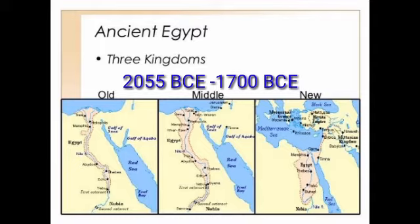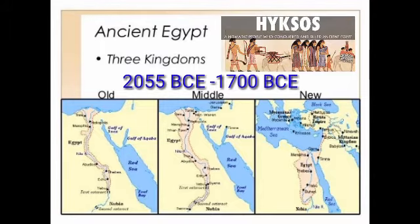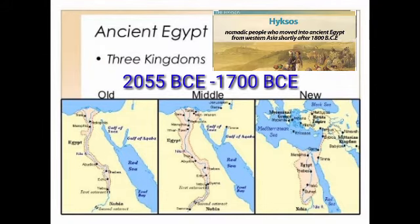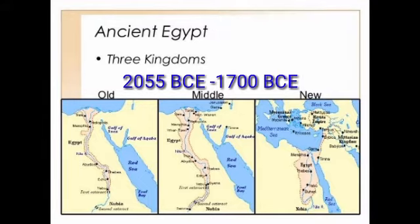The Middle Kingdom: This period extended approximately from 2055 BCE to 1700 BCE. In about 1650 BCE, Egypt was invaded by the Hyksos tribe. The Hyksos ruled for a short period till about 1565 BCE. The Egyptian kings soon regained their land.